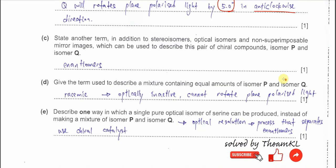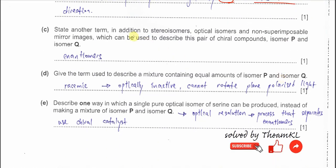Part C. State another term in addition to stereo isomer, optical isomer, or non-superimposable mirror images to describe this pair. This is a new name for many of you — we call them enantiomers. It is actually the same as all of those other terms. Enantiomers: a pair of optical isomers.